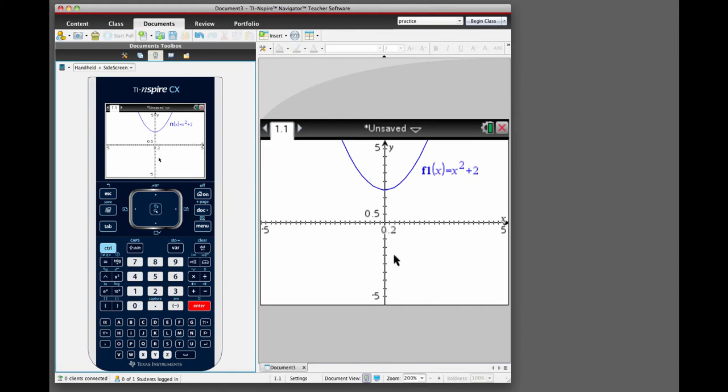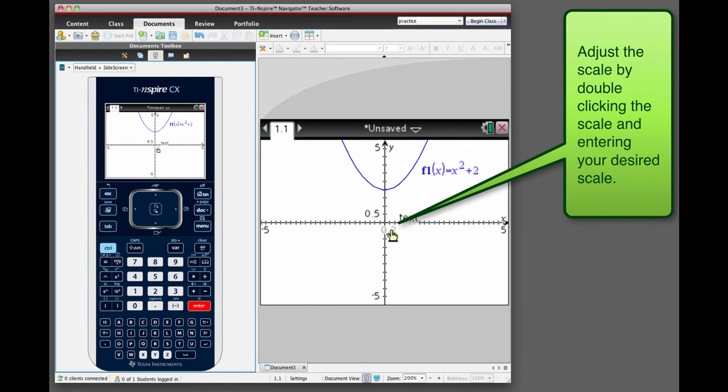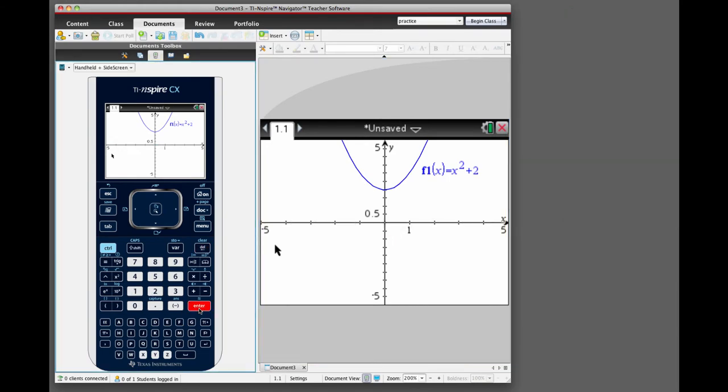You also can change the axes by changing the scale. So if you double click on the scale, put in the number you want. Here we're just going to make it a scale of one on the x and a scale of one on the y. So I double click onto the y scale now and put in a one and hit enter and I've changed the scale.